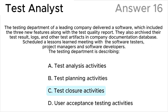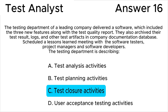The correct answer is C – test closure activity. The key point is that the software was delivered. This means the delivery of the software with the new features indicates that the testing phase is complete. A report on test quality is often part of the closure activity to summarize the overall quality of the testing effort.